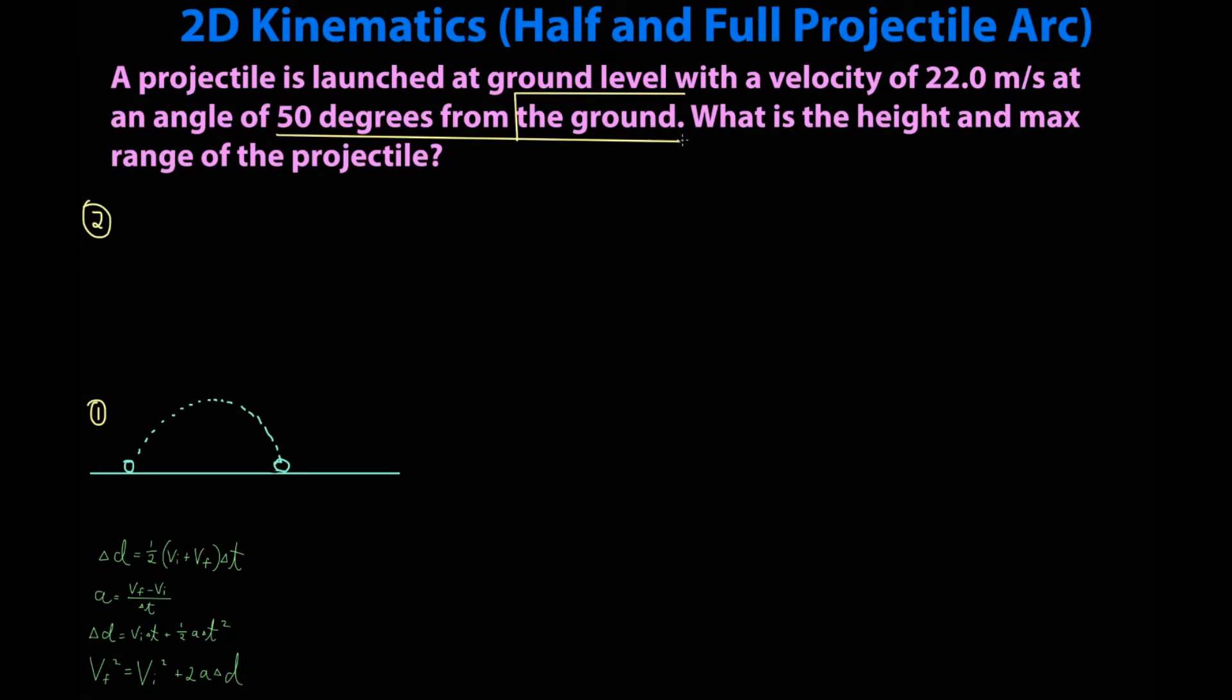What they mean here is the horizontal. They literally mean the horizontal surface of the ground. So if this is the ground, the vector I'm looking at is this way, 50 degrees above the ground. I'm going to erase this.